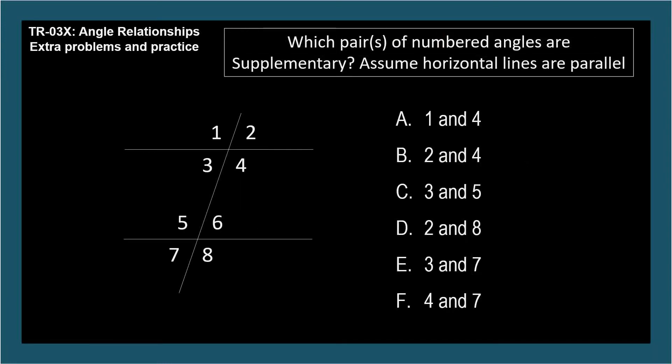Which pairs of numbered angles are supplementary? Assume the horizontal lines are parallel. There's more than one correct answer, so pause and note them and I'll give the answers all at once. B, C, D, and F are supplementary. Answer F has a little twist. Angle 4 is congruent to angle 8, which is supplementary with angle 7. So angles 4 and 7 are supplementary.